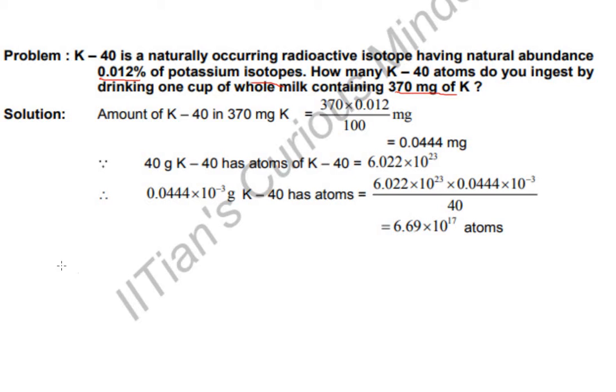You people know that potassium atomic weight is 39. Generally, most of the potassium atoms have this atomic weight. It occurs in two isotopes: one is K-39 and one is K-40.